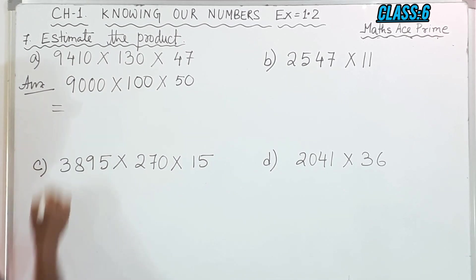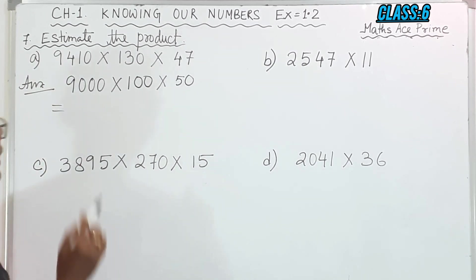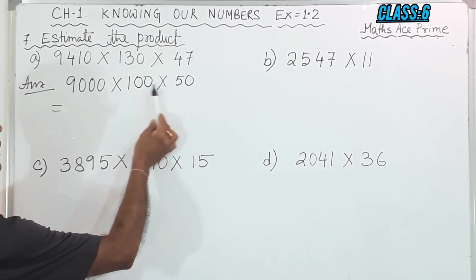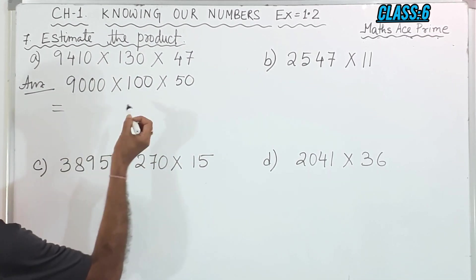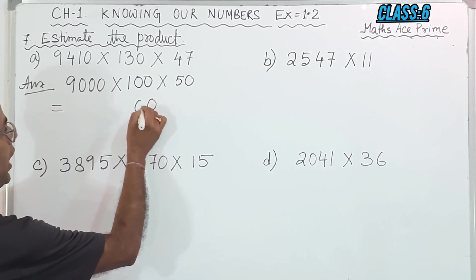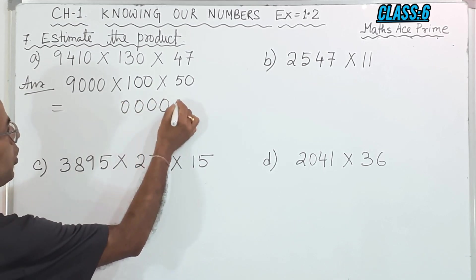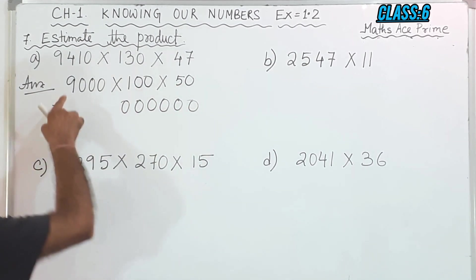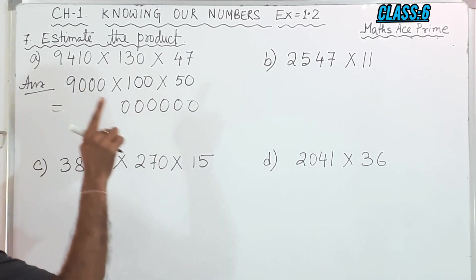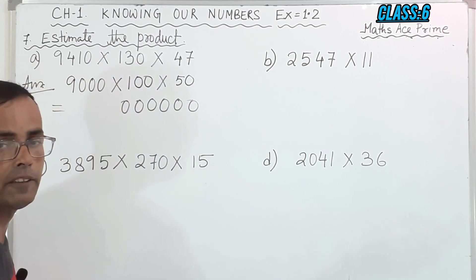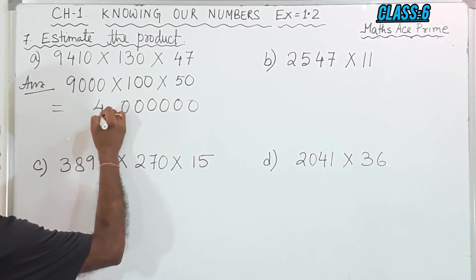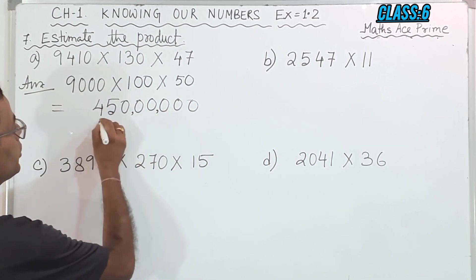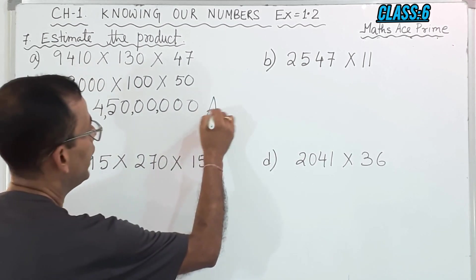Now we are going to multiply. The easier way is to count how many zeros are there: 1, 2, 3, 4, 5, 6 — so we will write 6 zeros. Now 9 into 1 is 9, then 9 into 5 is 45. So we write 45 followed by 6 zeros, then put the comma. So this is the answer.